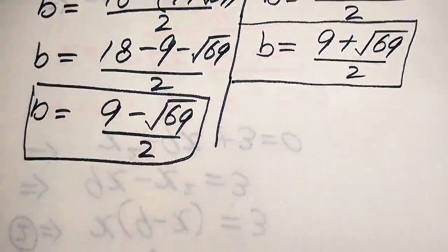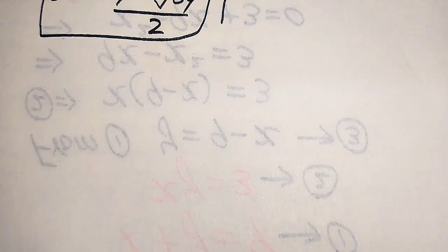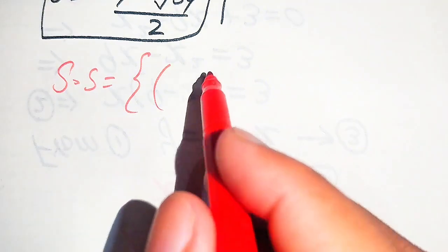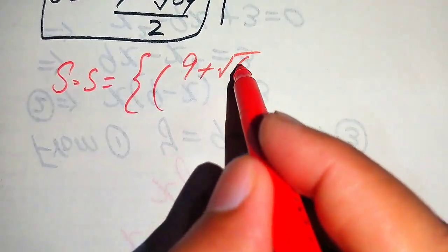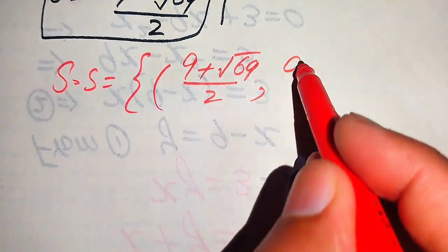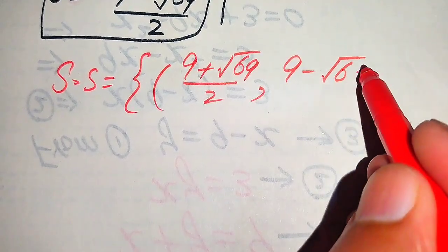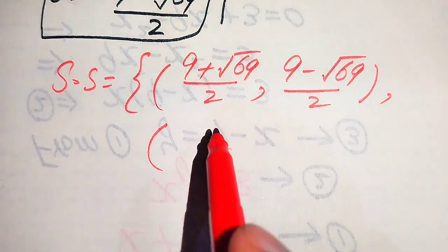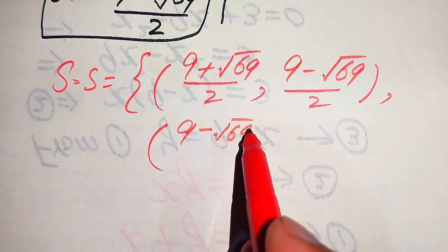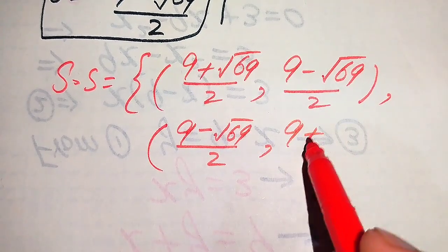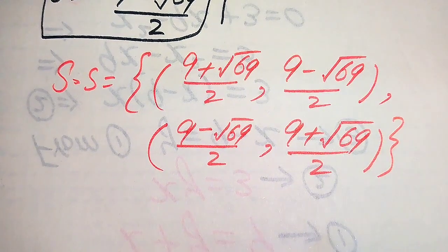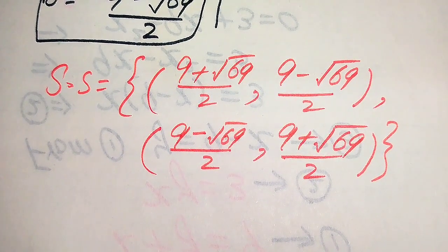Finally, there are two solution sets. The first solution set is a equals (9 plus square root of 69) divided by 2 and b equals (9 minus square root of 69) divided by 2. The second solution set is a equals (9 minus square root of 69) divided by 2 and b equals (9 plus square root of 69) divided by 2. This is our final answer. Thank you so much for watching — please subscribe to my channel for more exciting videos.